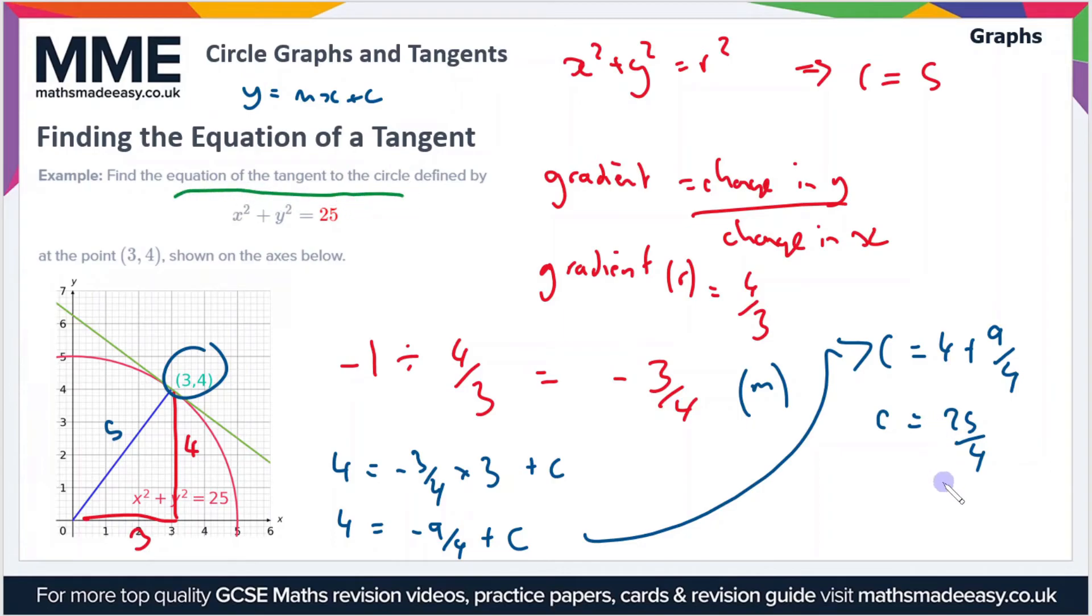Therefore, the equation of the tangent to the circle at the point three four is going to be y equals minus three quarters x plus 25 over four.